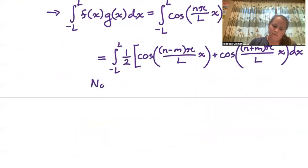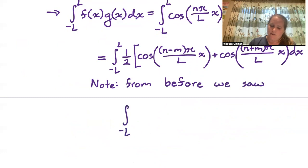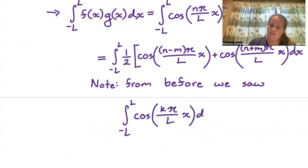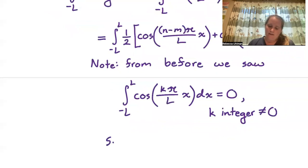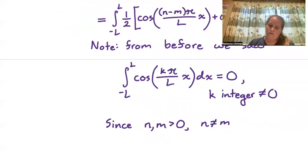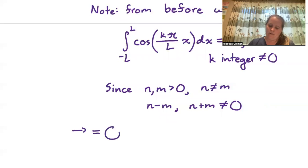From before, we saw that the integral from −l to l of cos(kπx/l) dx equals zero for any integer k not equal to zero. Since n and m are both positive and n ≠ m, both (n−m) and (n+m) are nonzero, and so we get that our integral is zero.